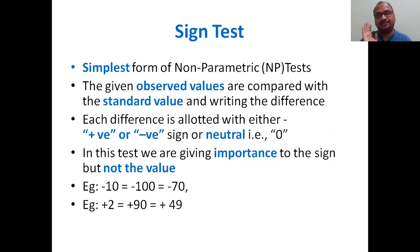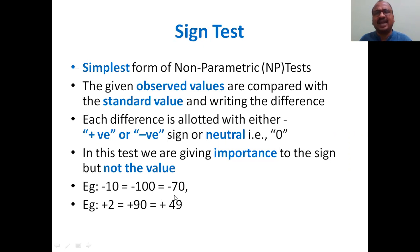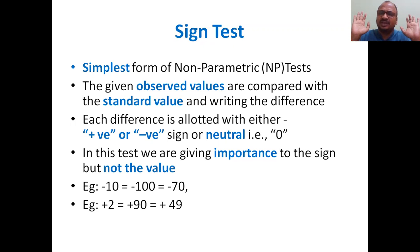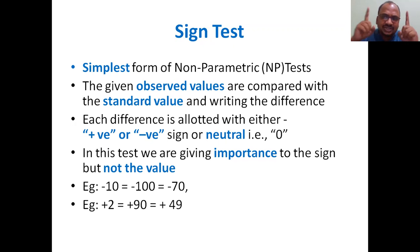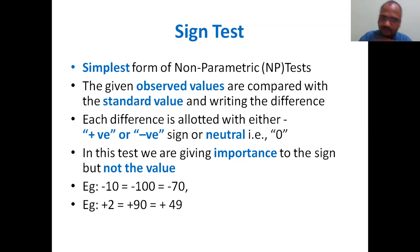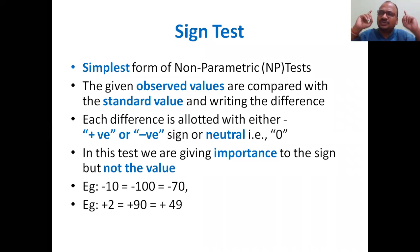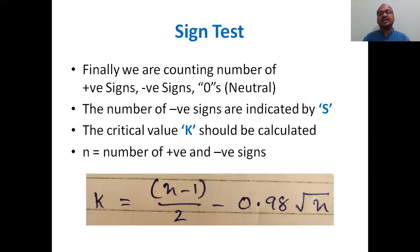For example: minus 10, minus 100, minus 70 — all are equal in this test. Once you assign a negative sign, that's it; all negatives are equal. The number doesn't matter — whether it is 70, 100, or one lakh — just focus on the sign. Similarly, plus 2 equals plus 90 equals plus 49; all positives are equal.